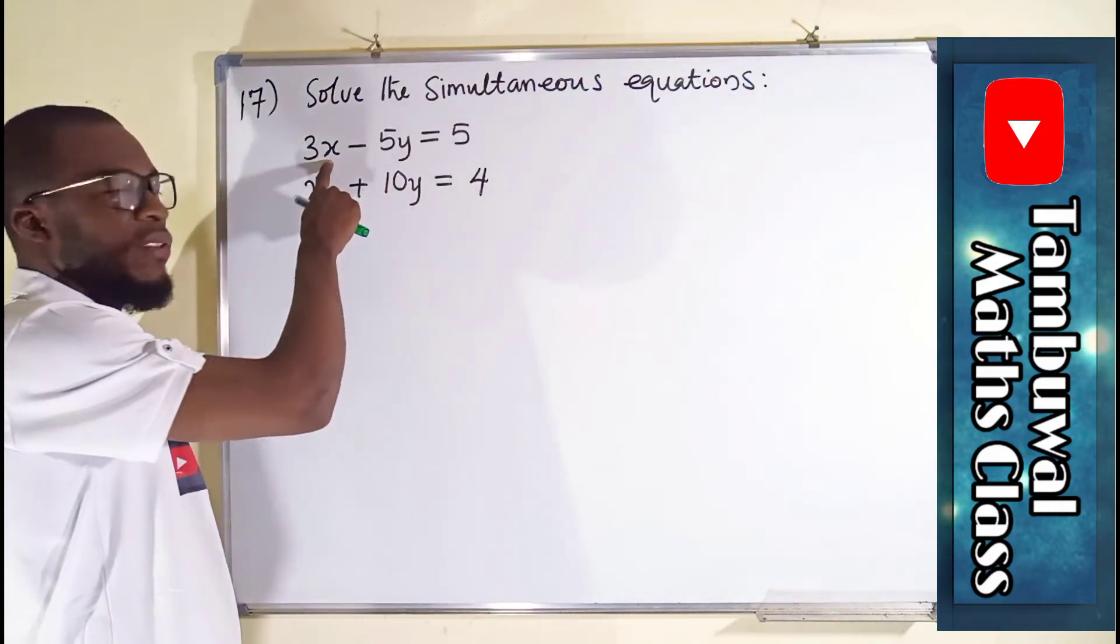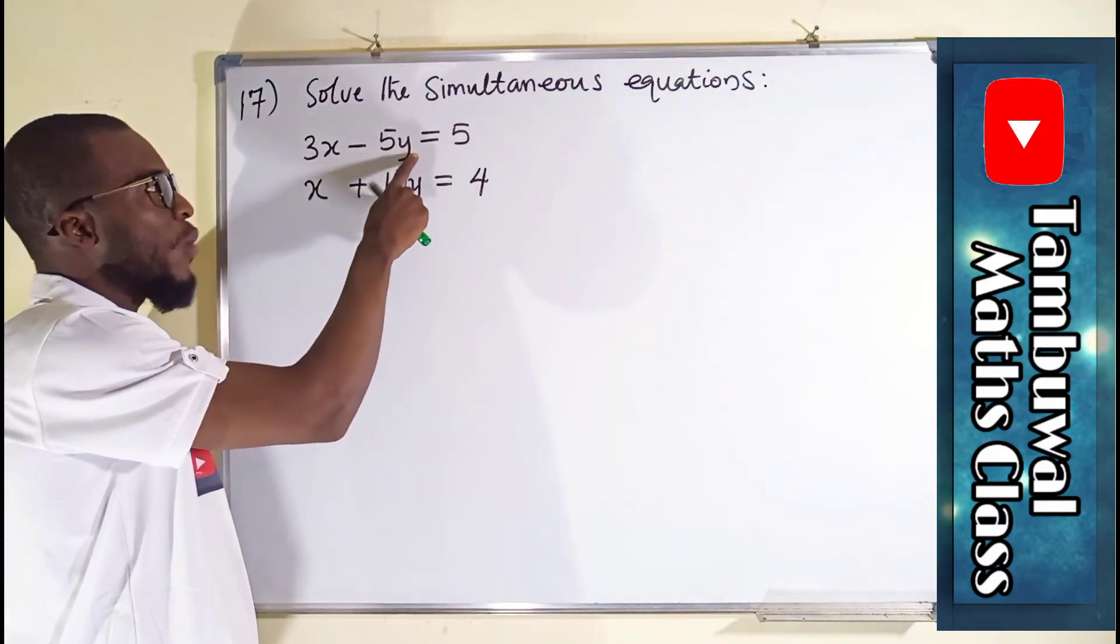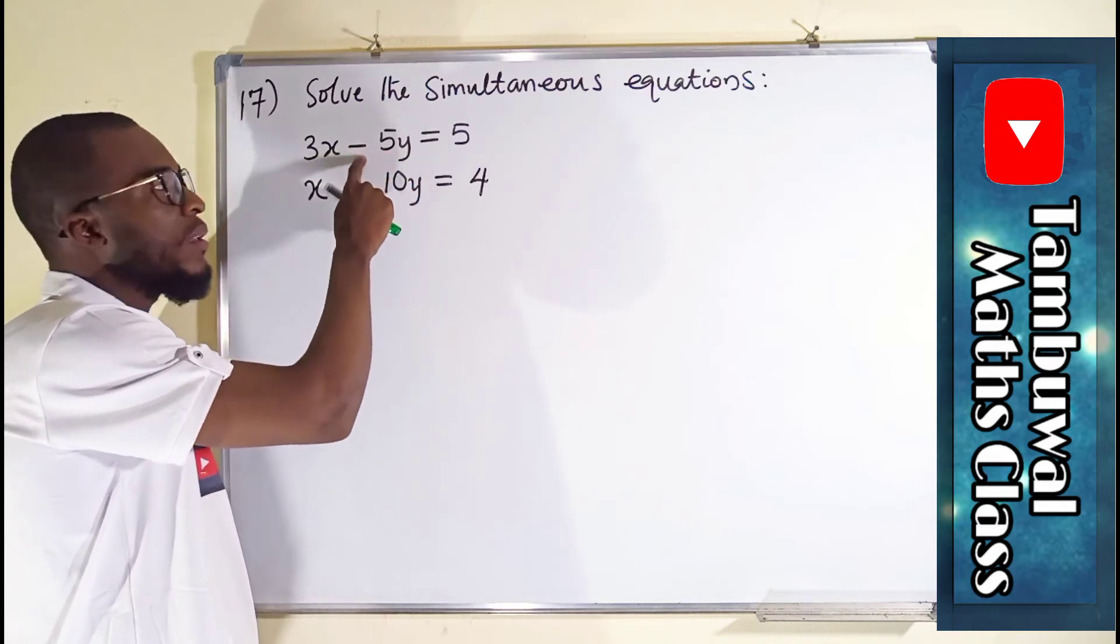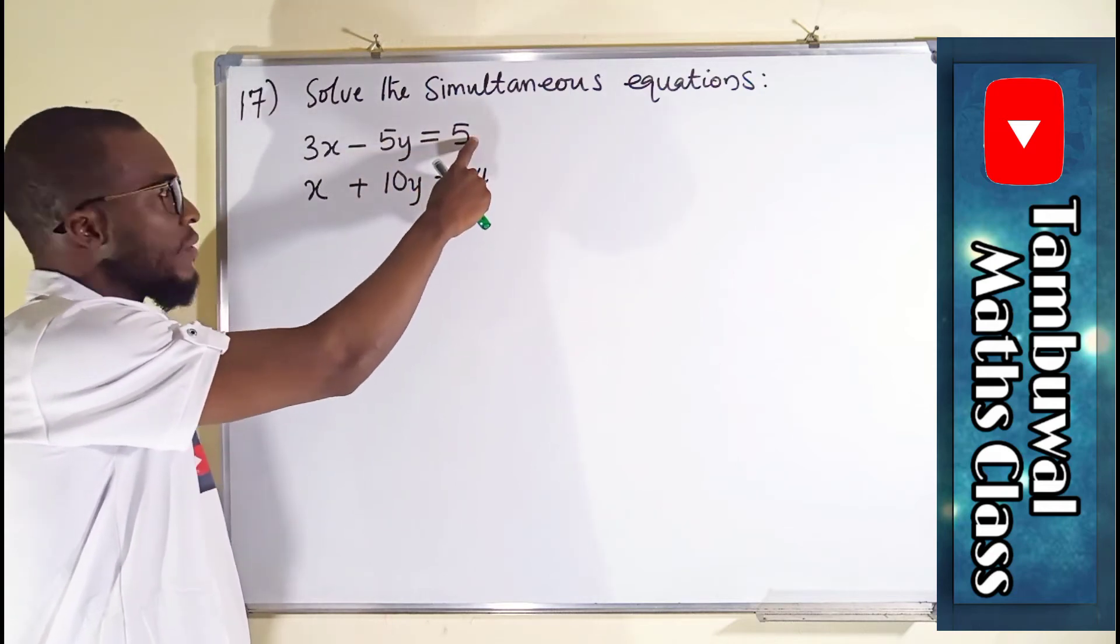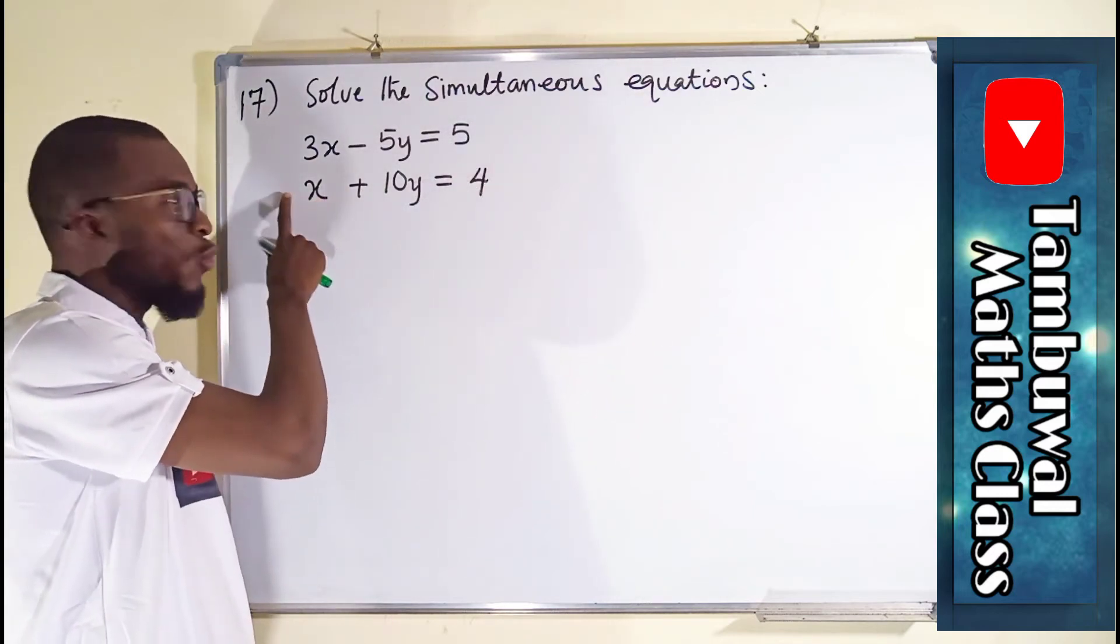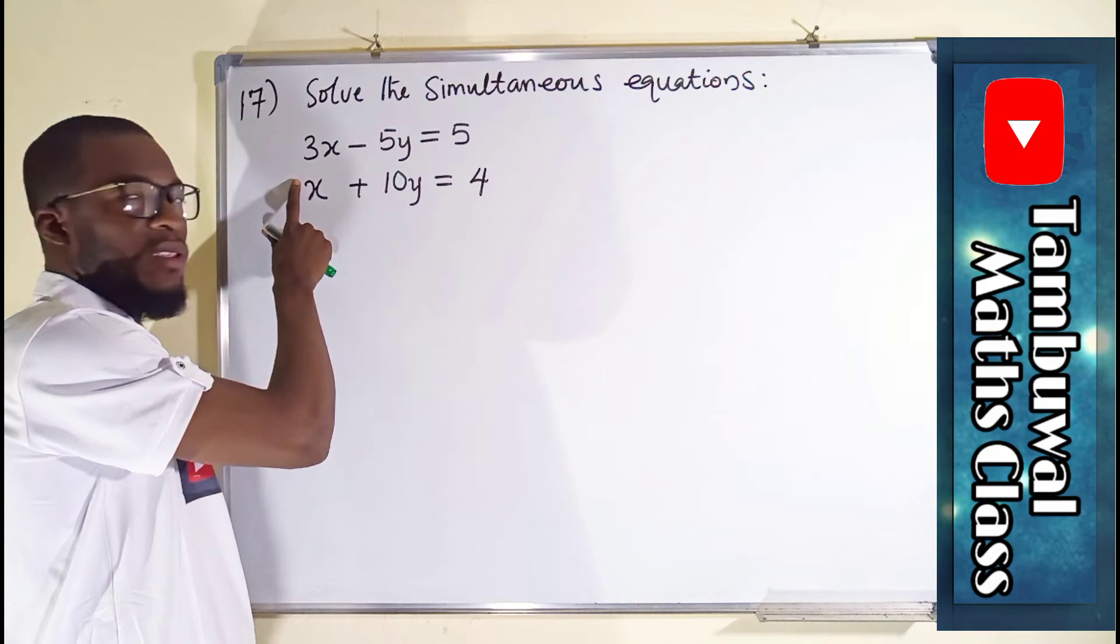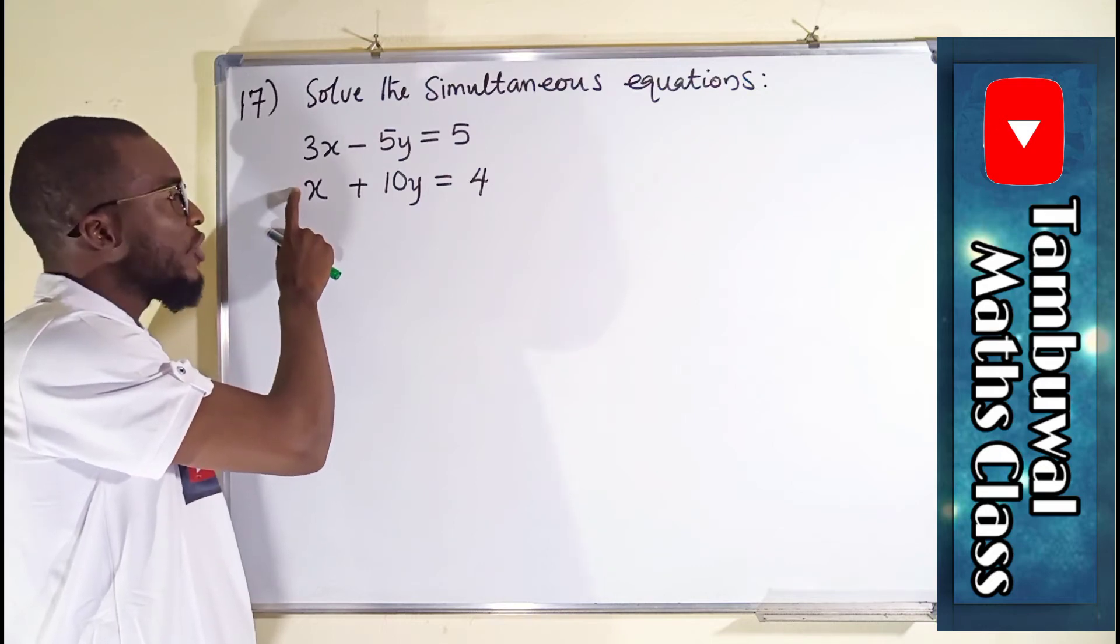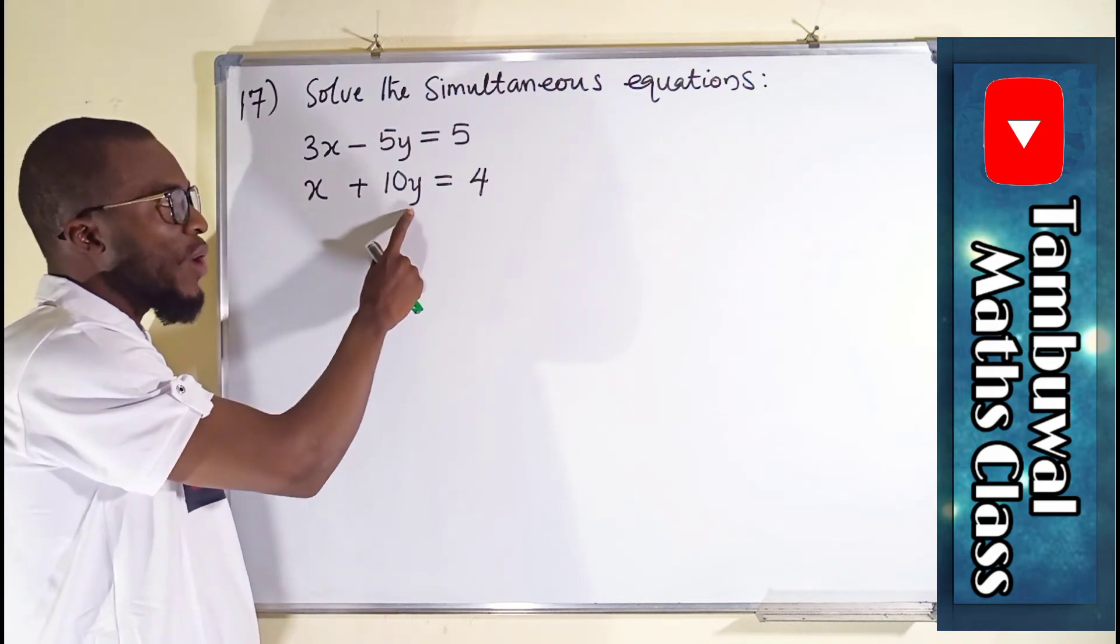The coefficient of x here is 3. The coefficient of y here is minus 5 together with the sign. And this is constants, 5 and 4. The coefficient of x here is 1, because you see it is invisible, so it is naturally 1. The coefficient of y here is 10.